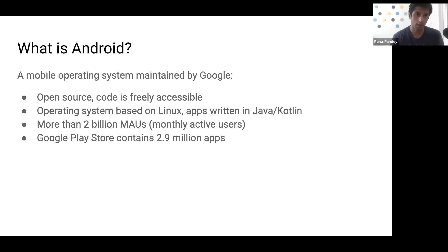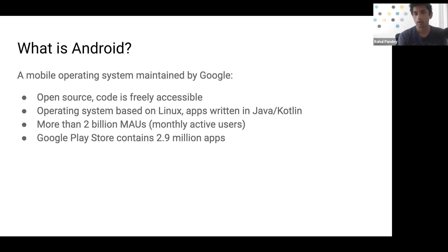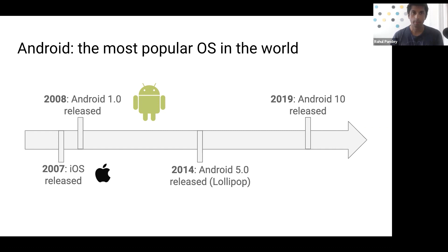In addition to having so many users, there's also a thriving developer ecosystem around Android. The Google Play Store, which is equivalent to the App Store on Android, contains almost 3 million apps — that gives you a sense of how much functionality developers have added into the platform. Android is the most popular operating system in the world.